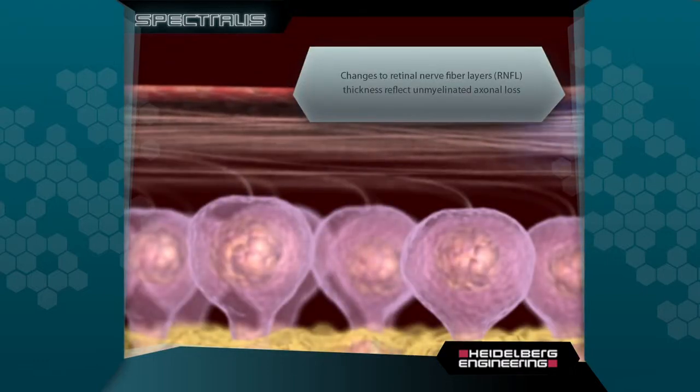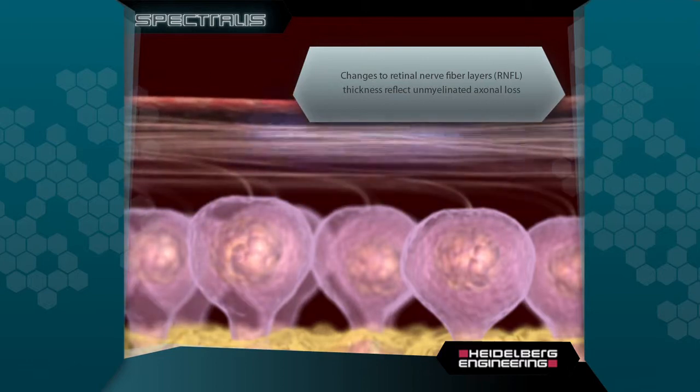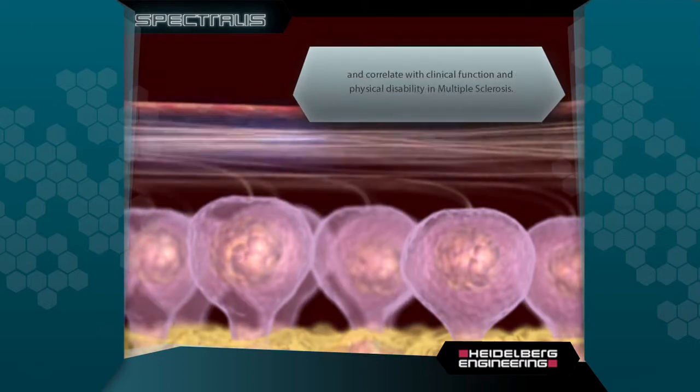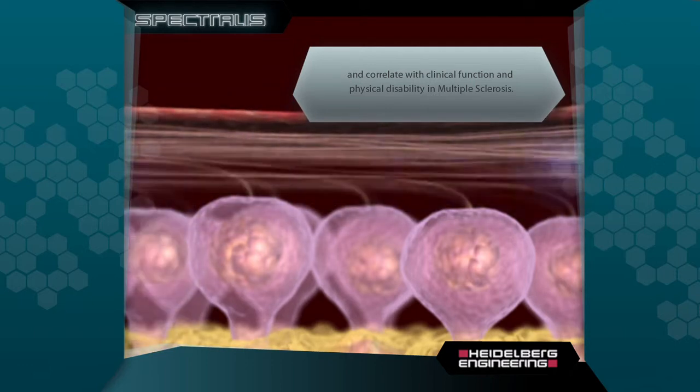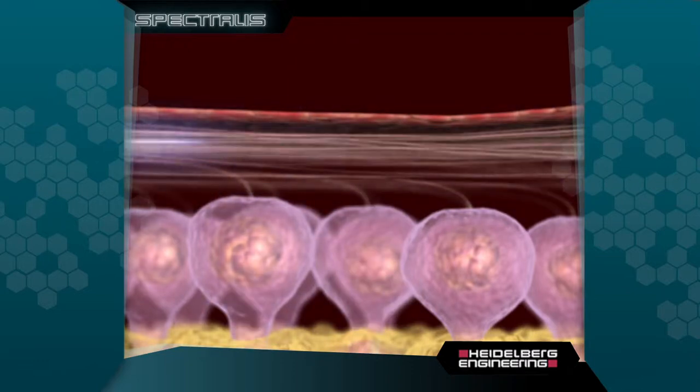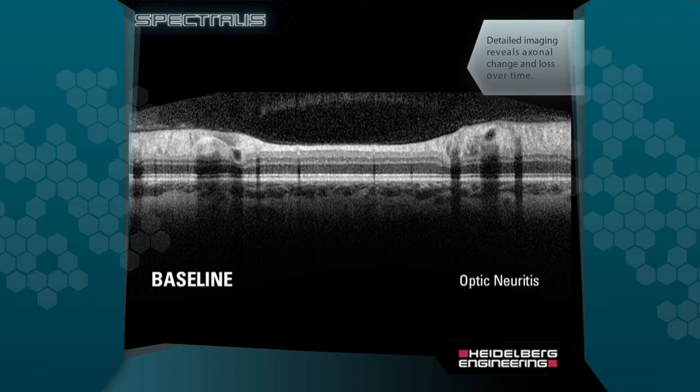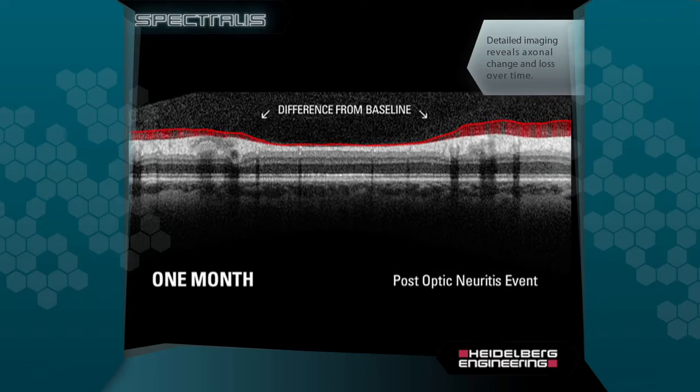Changes to retinal nerve fiber layer thickness reflect unmyelinated axon loss and correlate with clinical function and physical disability in multiple sclerosis. Detailed imaging reveals axonal loss and change over time.